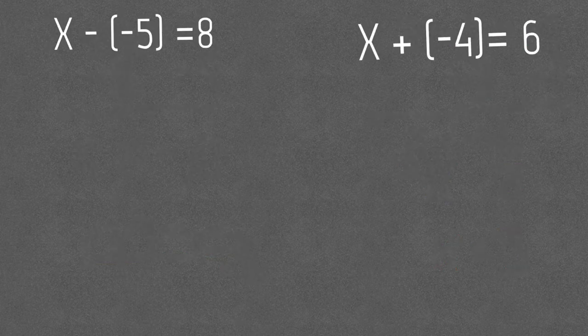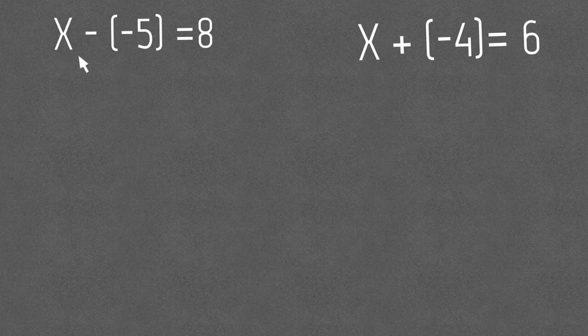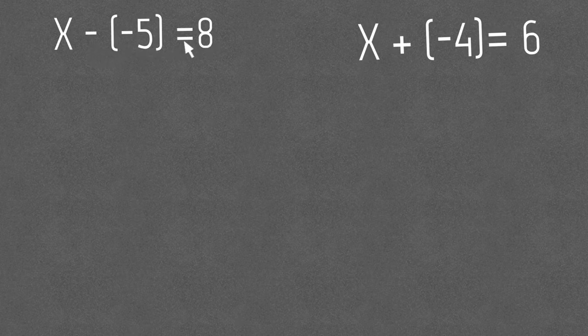Okay let's try some different ones. This time we have x minus negative 5 so there's our negative integer equals 8. Now this one I saw some common mistakes and I totally understand why.